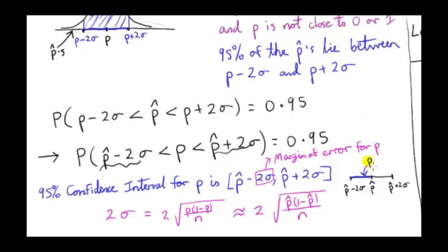This is the margin of error, which is the maximum distance that our unknown population proportion P could be from our sample proportion P hat. We just take a single sample and calculate P hat, and then we can get the 2σ. The 2σ is this distance here, which is the same as this distance here.